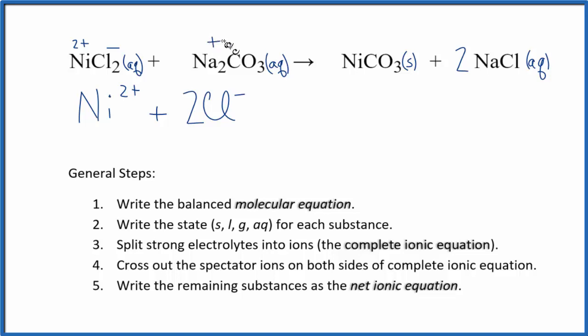Sodium's in group 1, so it has a positive charge. Carbonate, which is good to remember, is 2-. So we have sodium ion, Na⁺. Again, we have 2 of those, so put a 2 there. Plus, we have the carbonate ion, CO₃²⁻. Those are the reactants.